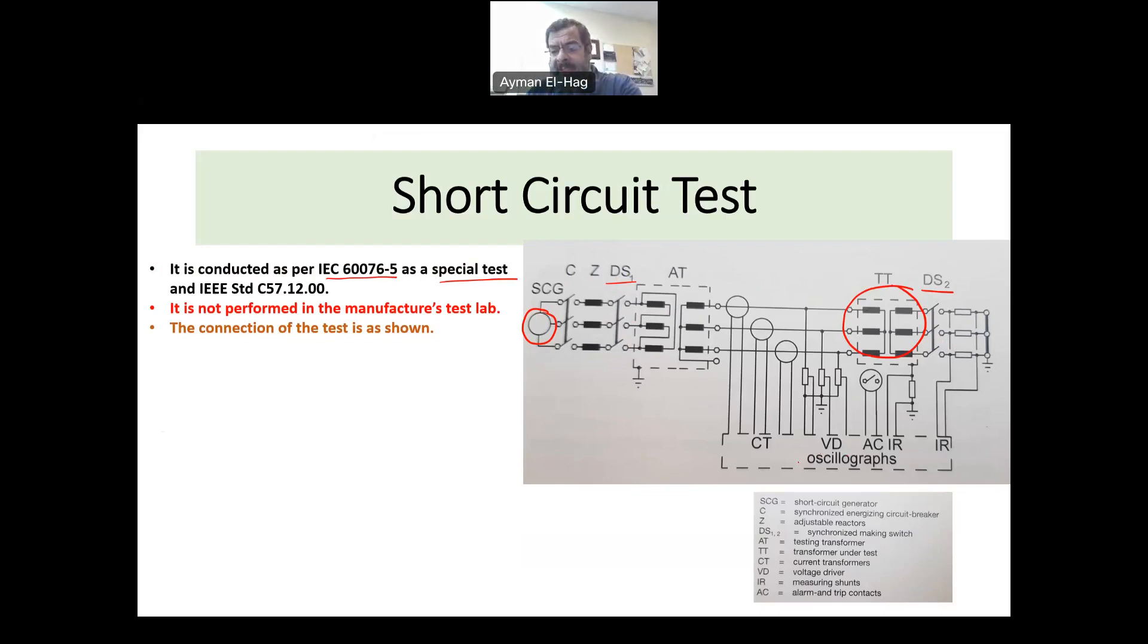Now, there are CTs and VTs to monitor the current and the voltage during the test. How is the test performed as per the IEC standard? You apply asymmetrical short circuits on each phase three times. So each phase will be subjected to a single line to ground fault three times, total of nine times for a three-phase transformer. As per the IEEE, you have two asymmetrical shots plus four symmetrical shots, total of six per phase.